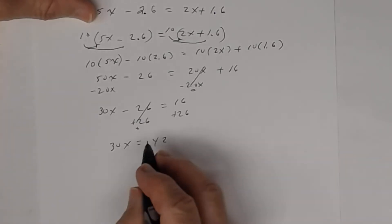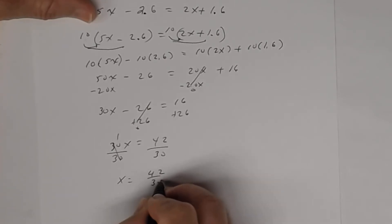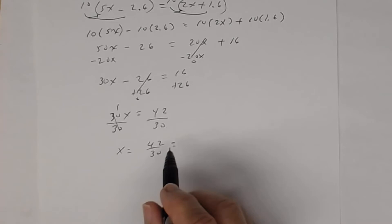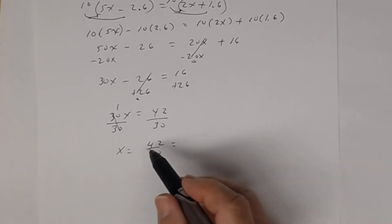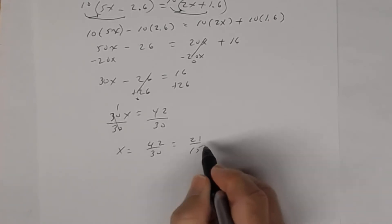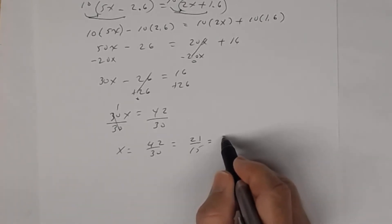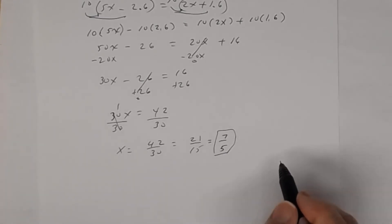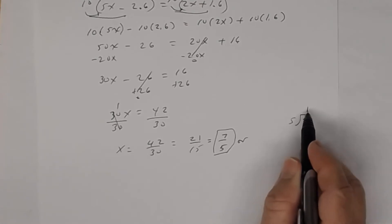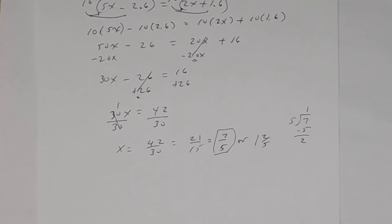Dividing both sides by 30: x = 42/30. Reduce: both are even so divide by 2 to get 21/15; then both divisible by 3 gives 7/5. Converting to a mixed number: 7 divided by 5 is 1 remainder 2, so x = 1 and 2/5.